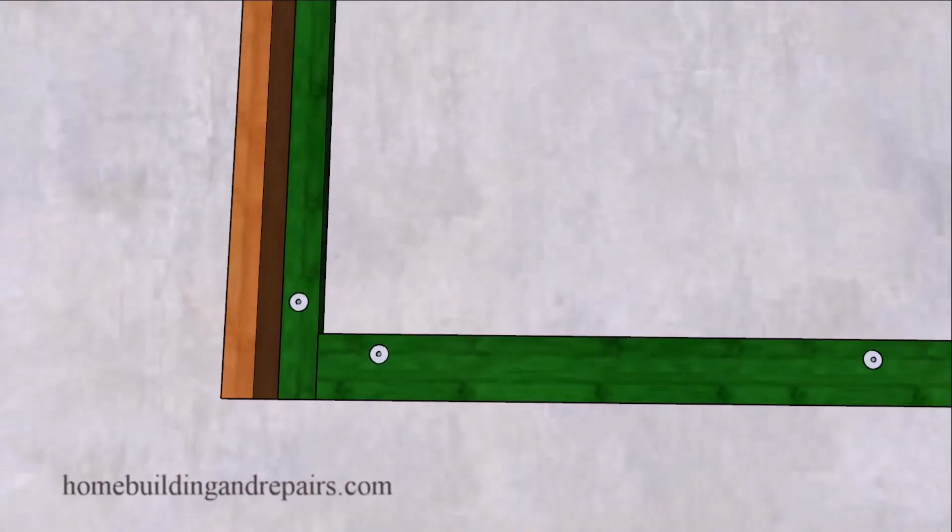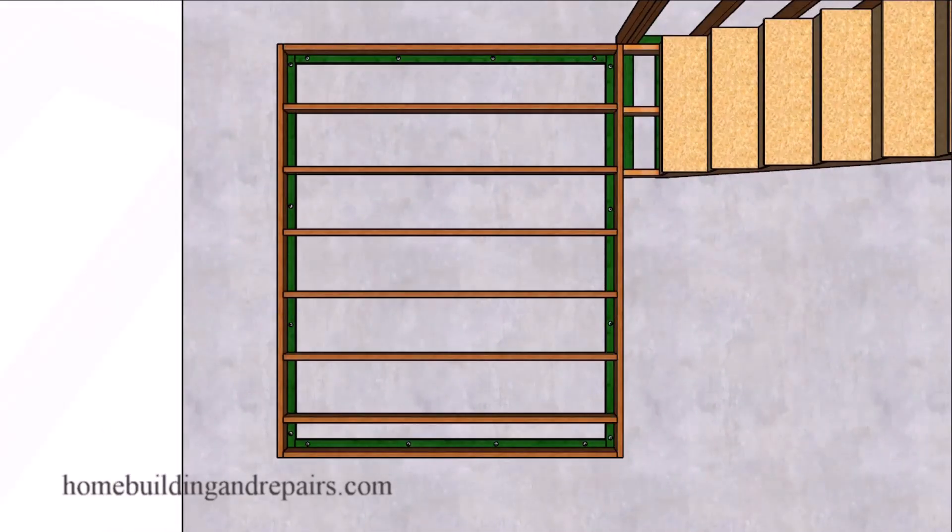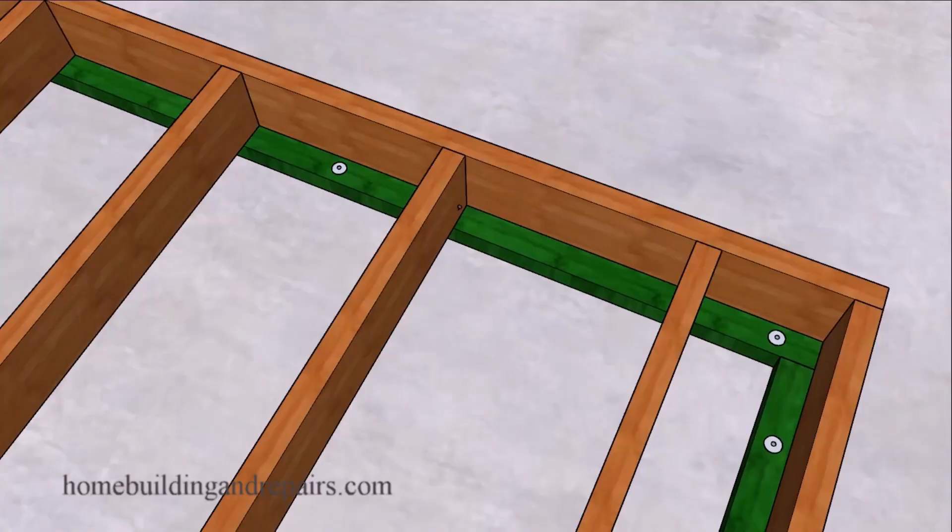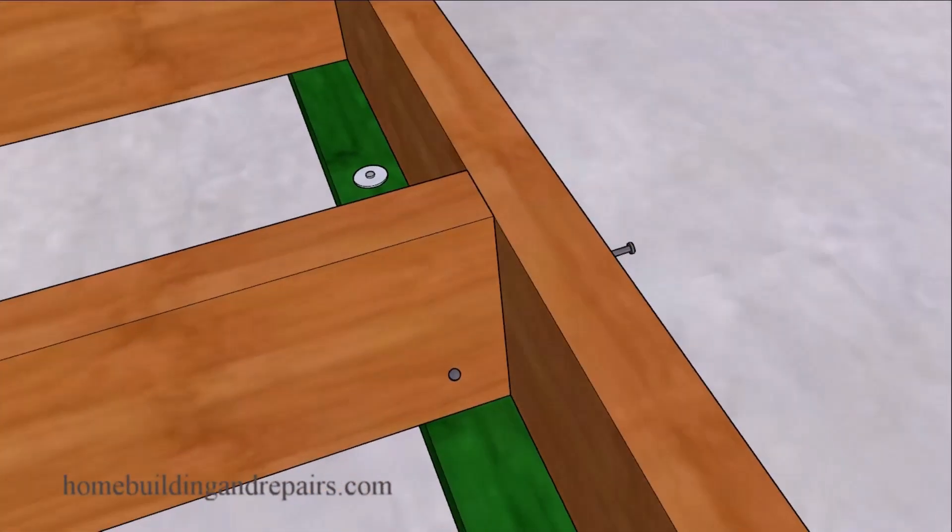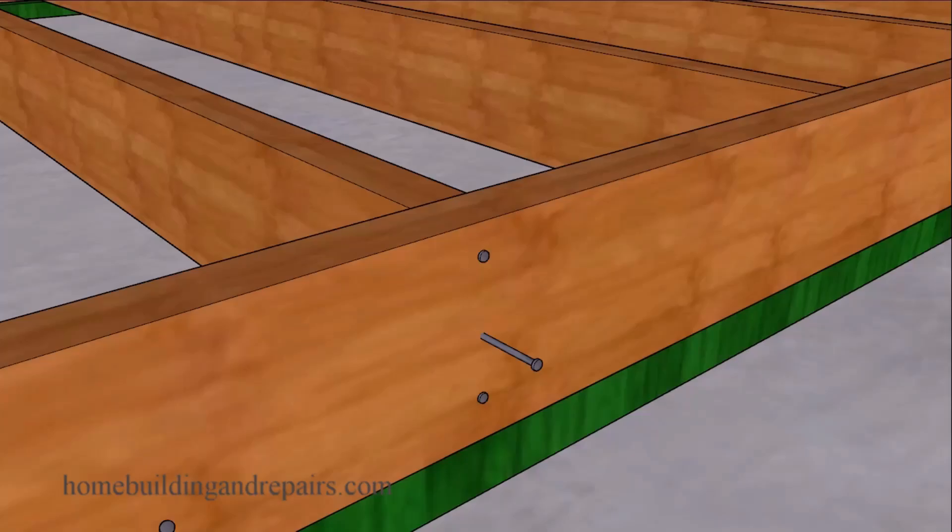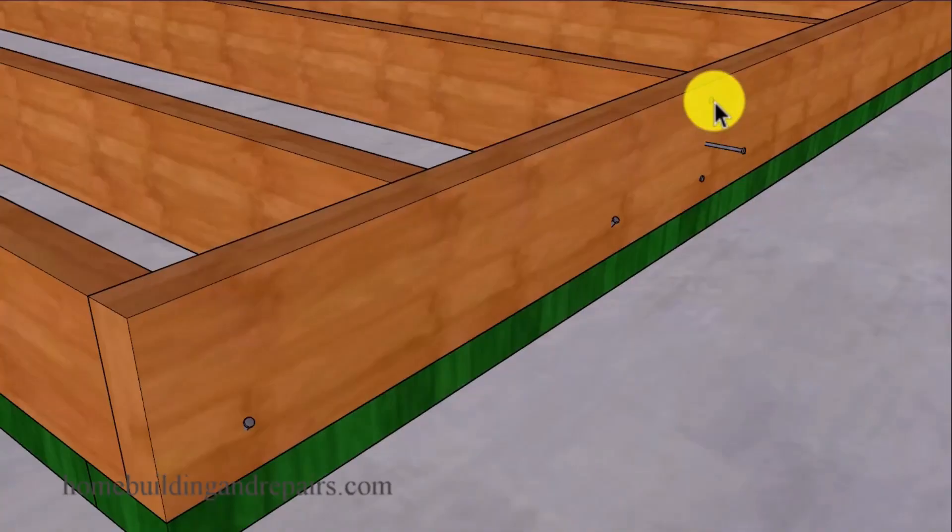Next install your rim joist and your floor joist by toe nailing the joist to the base plates using 16D angled nails. End nail through the rim joist into the floor joist, usually three nails for two by six and two by eight, four nails for two by ten or two by twelve.